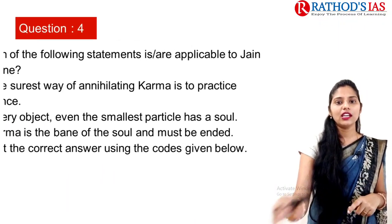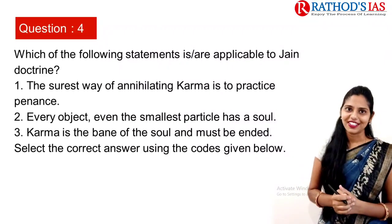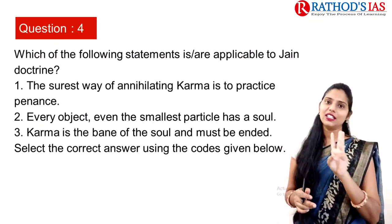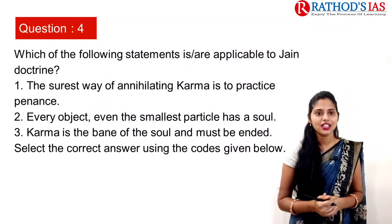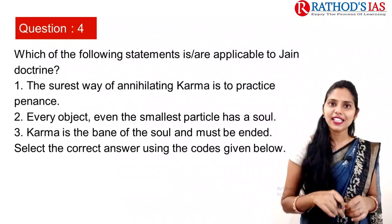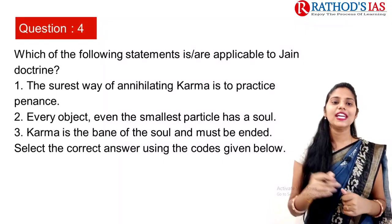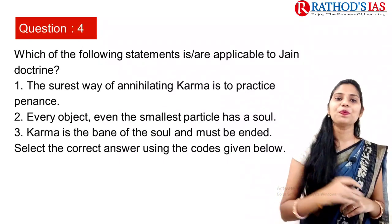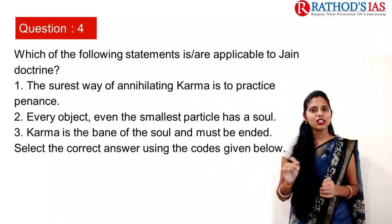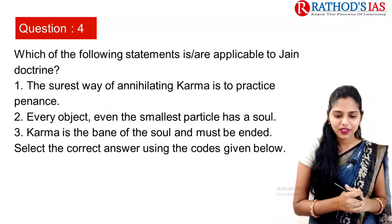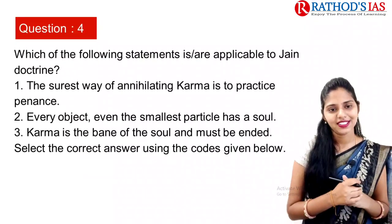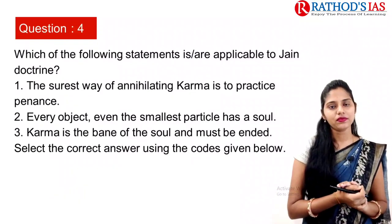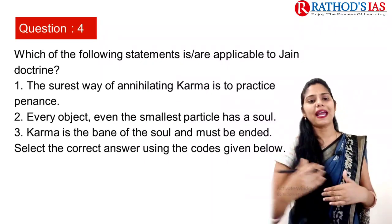The next question is about Jain doctrine. In 2013 itself, there was one question from IVC, two from Buddhism, and one from Jainism. The question asks: which of the following statements is or are applicable to Jain doctrine? The first statement is: the surest way of annihilating karma is to practice penance. In Jain doctrine, the important saying is 'Svadaya Paramtap' — which says that penance mainly washes away our karma.